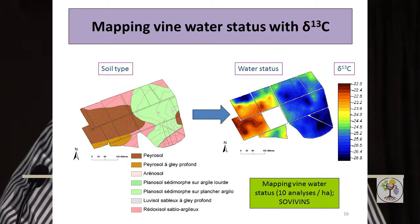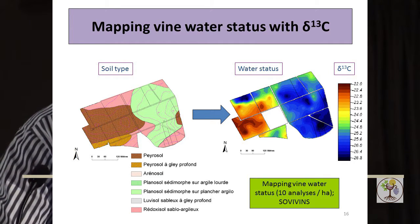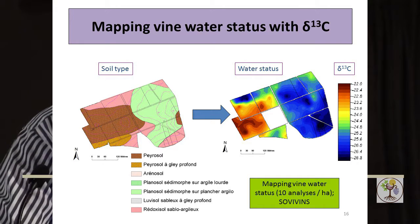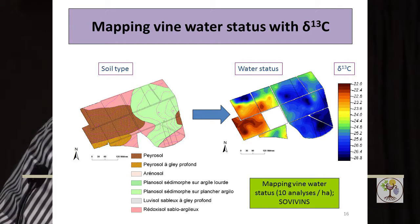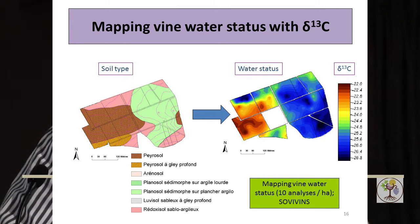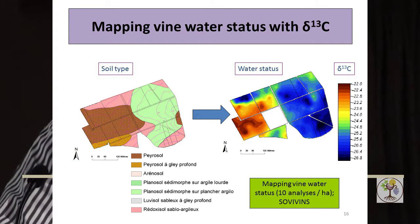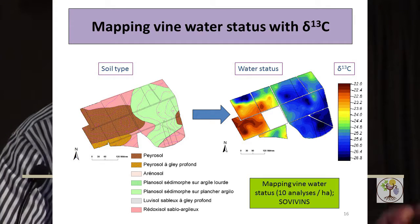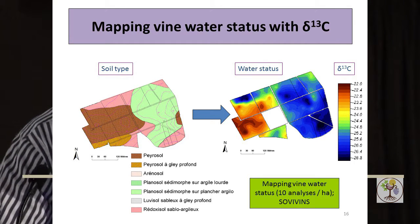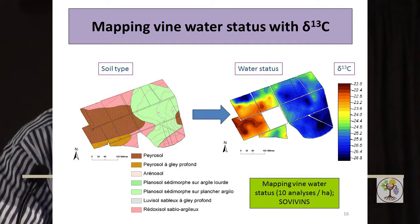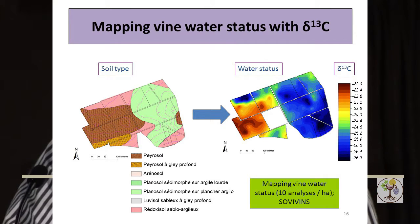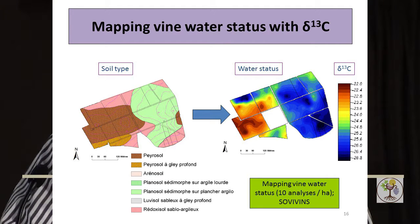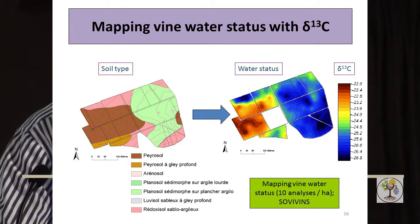Basically, the amount of carbon-13 incorporated in grape sugar increases with the level of water stress. So if you take a sample of grape juice at the end of the season and send it to a specialized lab, you can know how much water stress the vines faced during grape ripening. For the grower, you just have to sample your grape juice and send it to a lab — it's very affordable, less than $50 for a measurement. With this technique you can multiply the number of observations, which you cannot do with a pressure bomb, opening the possibility to map the water status of vines over an estate.